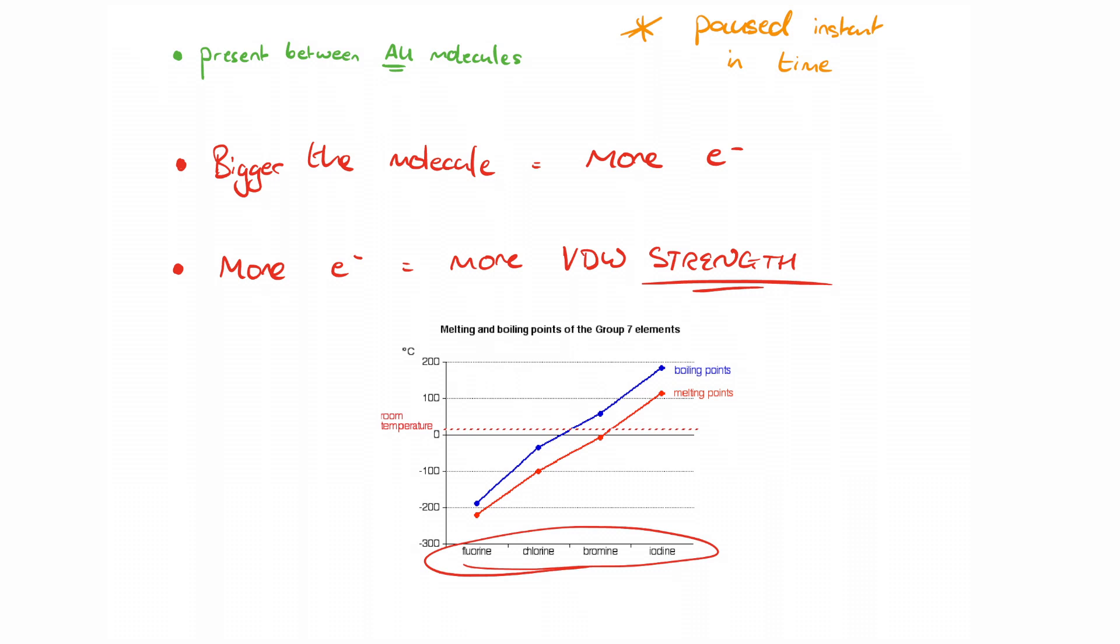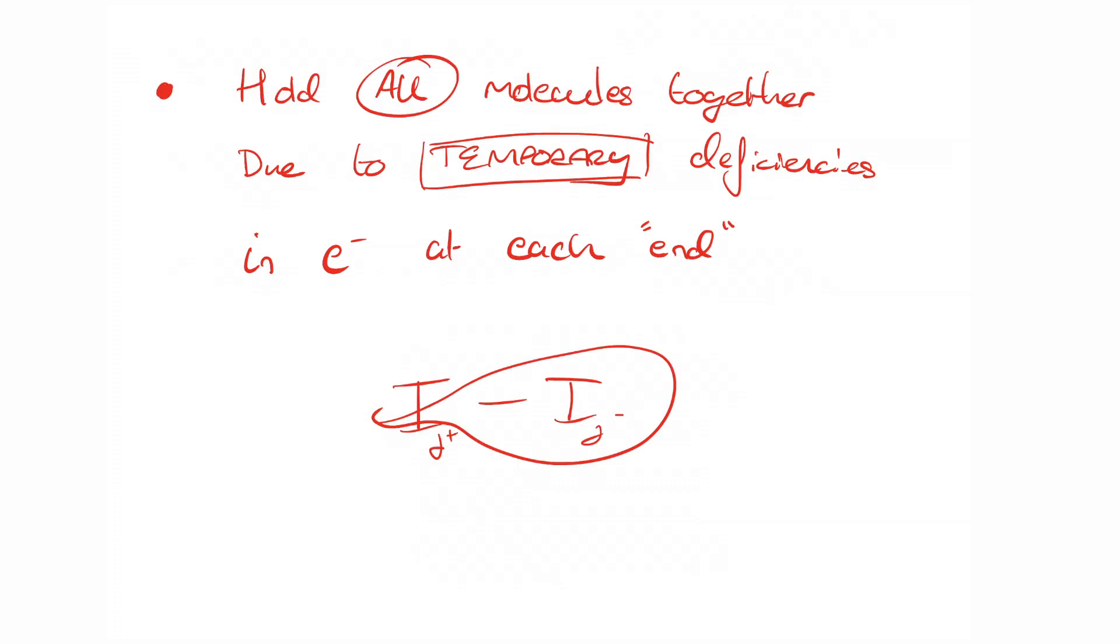As you'd expect, it increases because as you go down, another shell of electrons is added on and the size of the molecules increases. So van der Waals forces, they're holding non-polar molecules together thanks to temporary deficiencies and richness of electrons at either end.